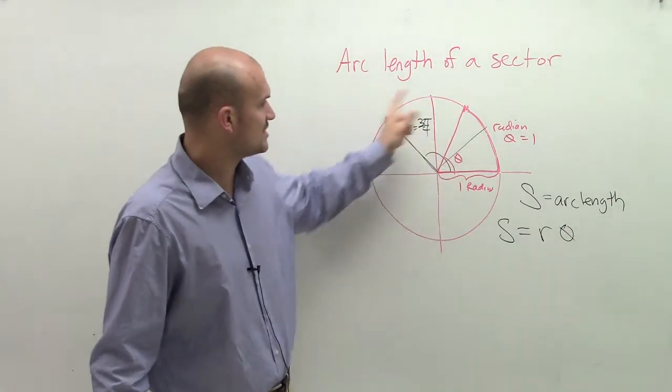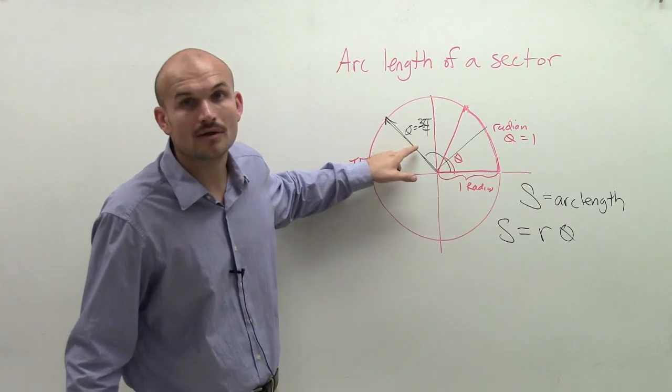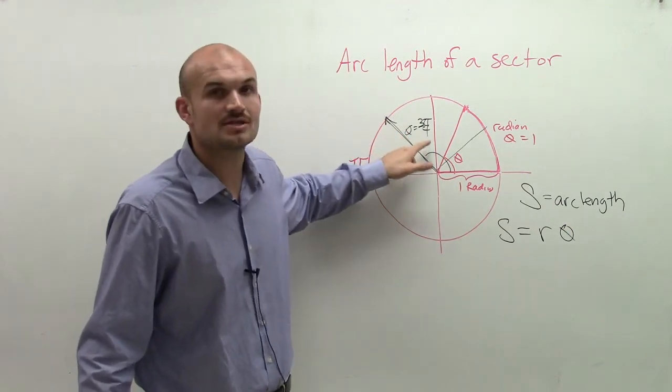So if I take 3 fourths of it, that means the arc length is 3 fourths, but the angle measure we also call is 3 fourths.